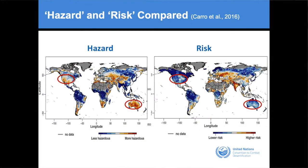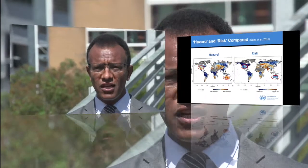At the UNCCD, what we are aiming at is to minimize risk. As you can see on the hazard map, places like Australia and the US appear in dark red, meaning they experience a lot of drought. But on the risk map on the right side, they appear in dark blue — meaning they have less risk of being impacted by drought. So our aim is to reduce vulnerability and exposure to drought, so there is less damage caused.